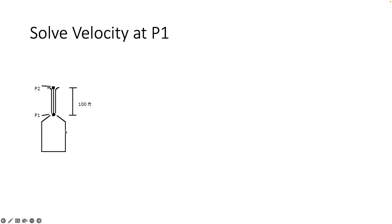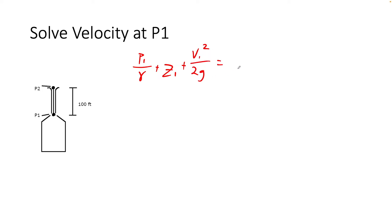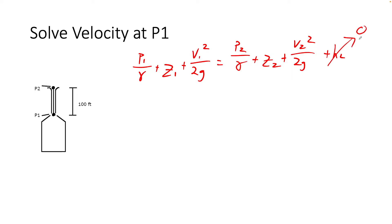We want to find the velocity at point one. Let's do what we always do and start with our energy equation, defined at points one and two: pressure at one over specific weight, plus elevation at one, plus velocity at one squared over 2g equals pressure at two, elevation at two, and velocity at two squared over 2g. Because this is not in a pipe, there is no head loss — friction when flowing through the atmosphere is negligible.